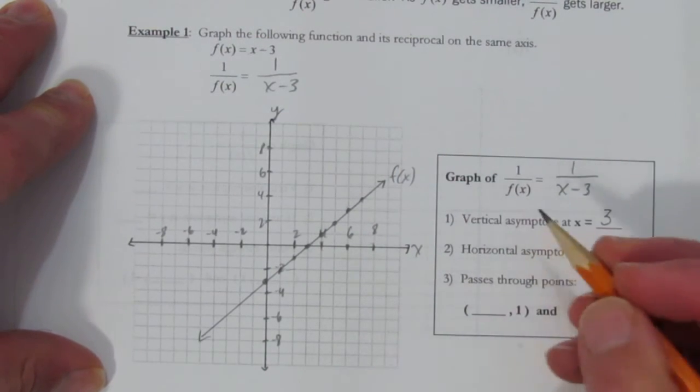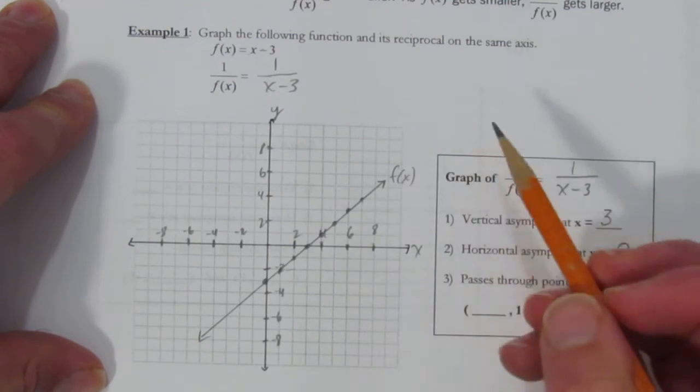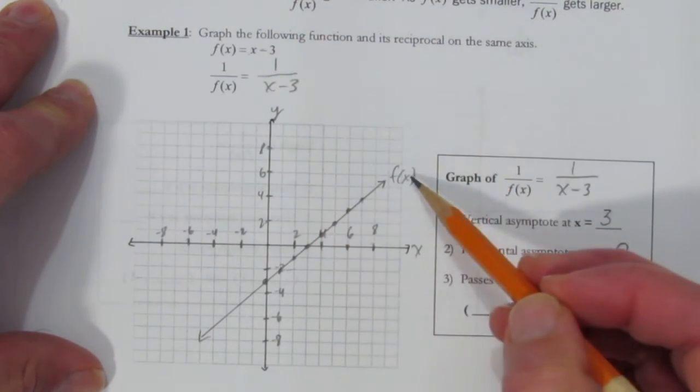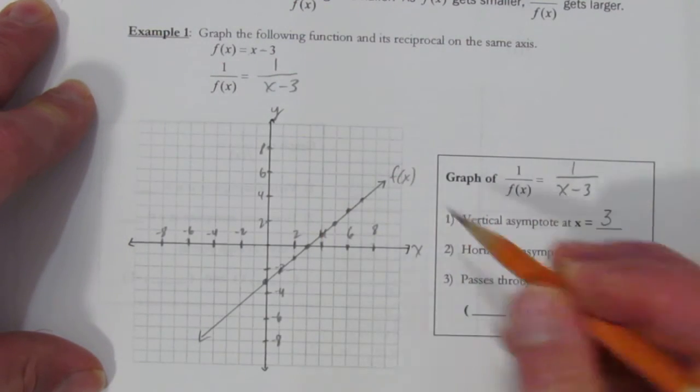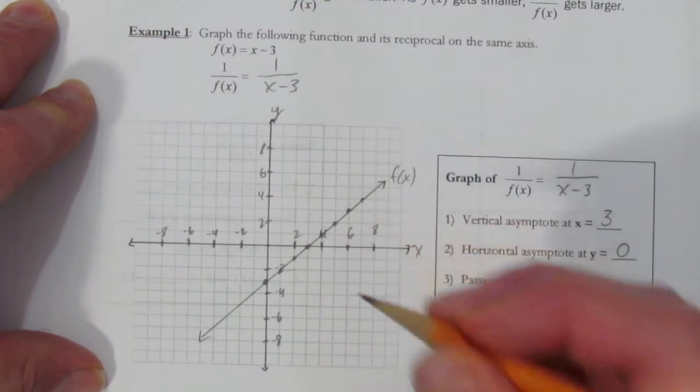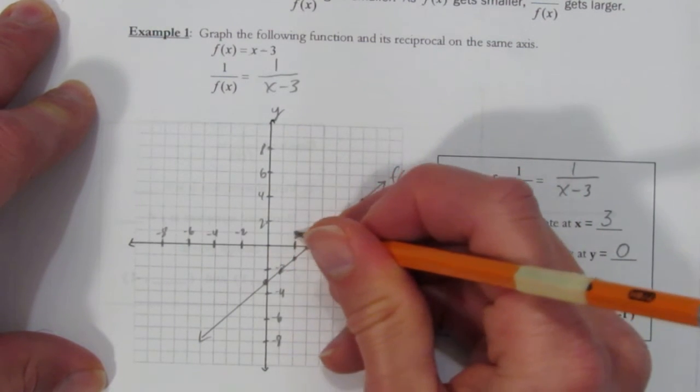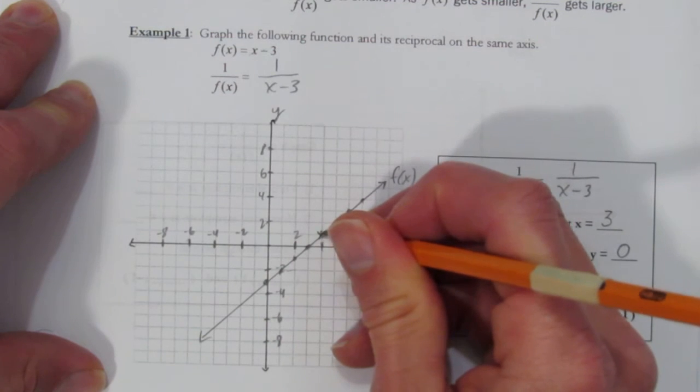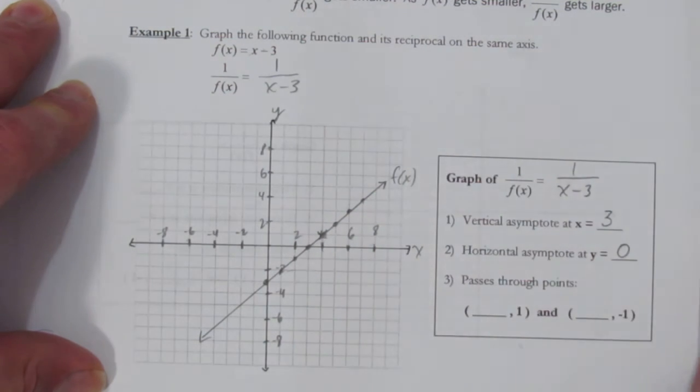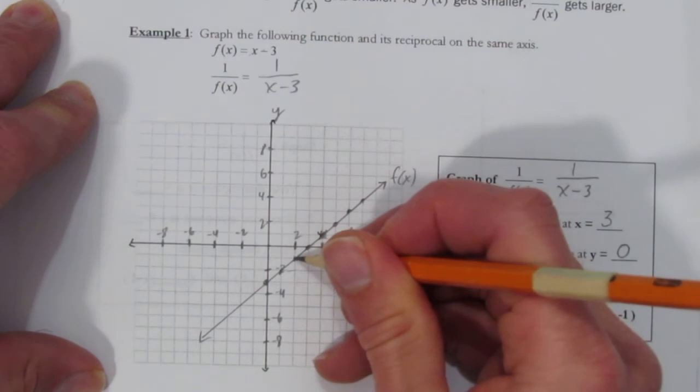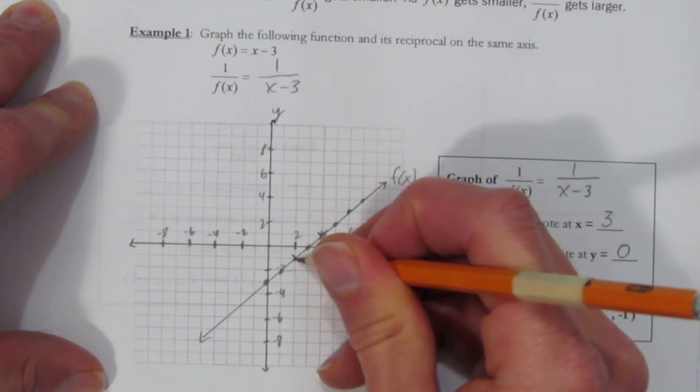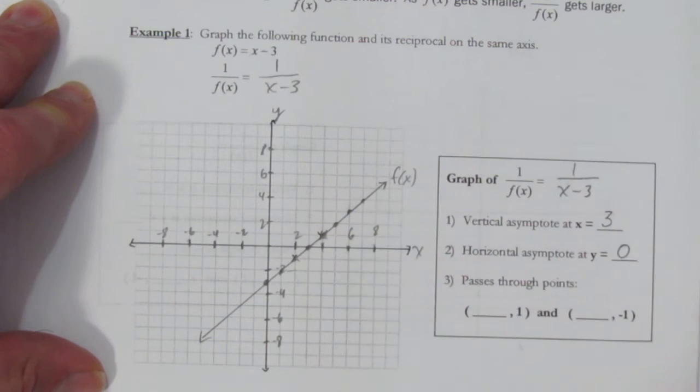What's good about that is now we can see wherever this function f(x) had a y of 1, it shares it with the reciprocal function. Here we are at a height of 1 - I'm going to put a little x here. This point has to be shared. And also wherever the function is at a height of negative 1, that's right here. That also has to be shared between them.